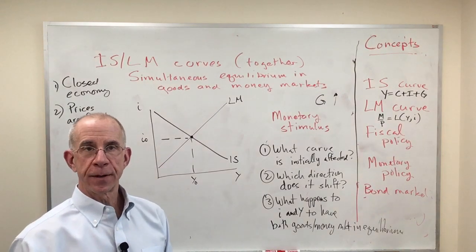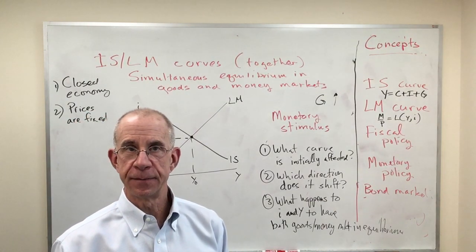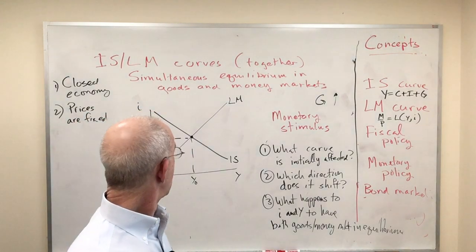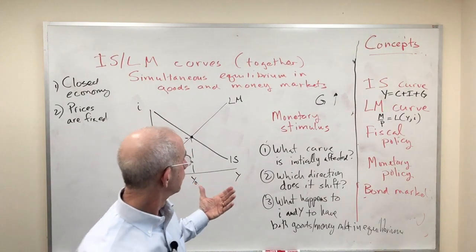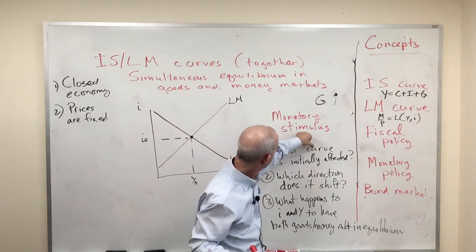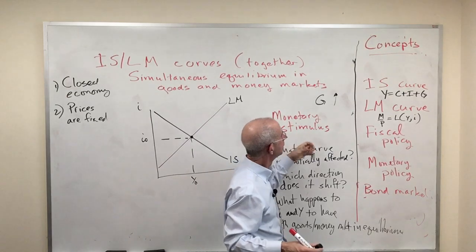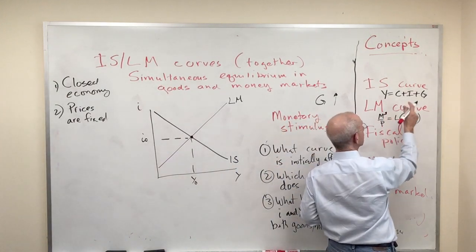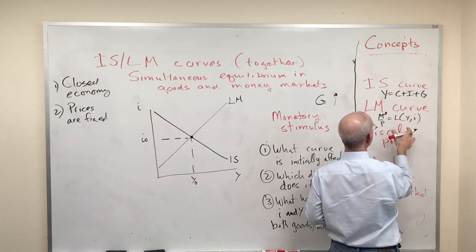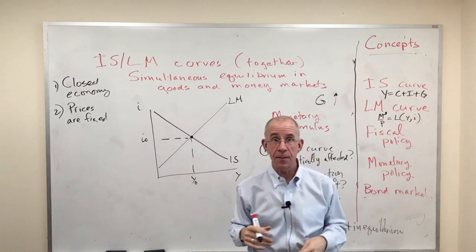We have, for example, an open market purchase of bonds by the Fed. That first thing you do, well, which curve is affected? Well, if you've got an increase in the money supply, it's not up here in the IS curve, it does show up down here in the LM curve.